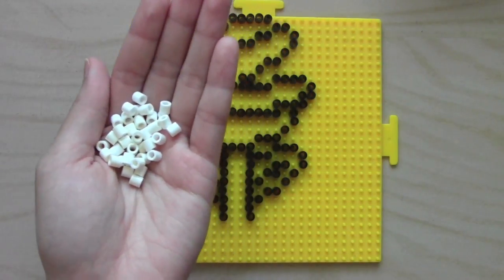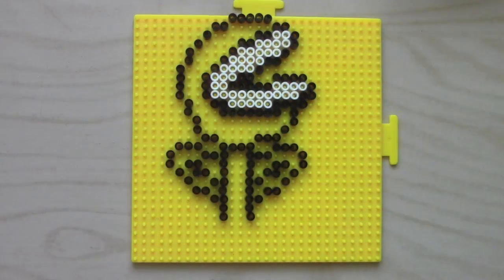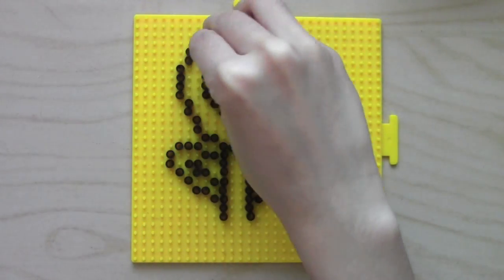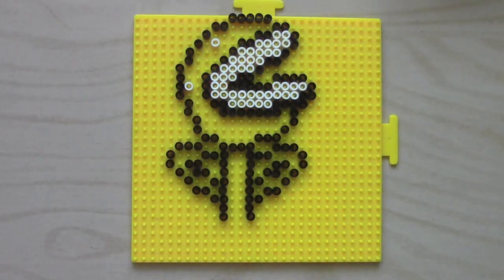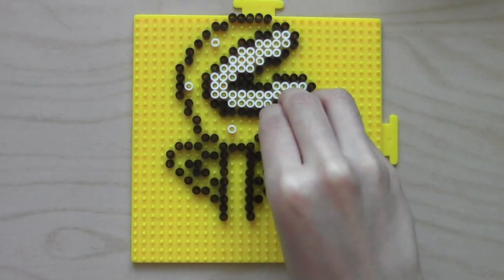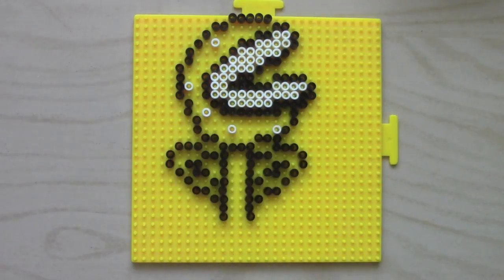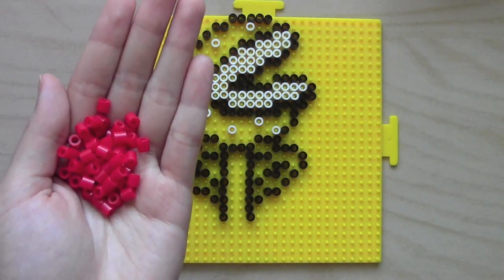Fill up the mouth with some white perler beads and fill up some random spaces around the head of the piranha plant. Fill the head with red perler beads.